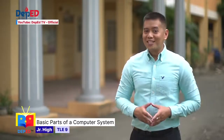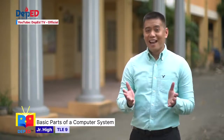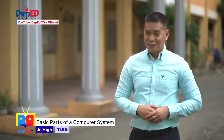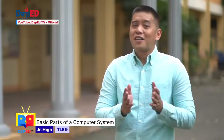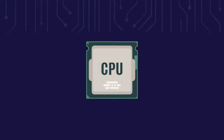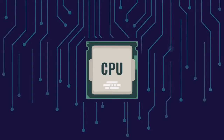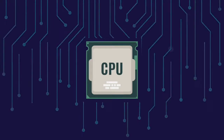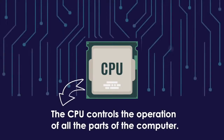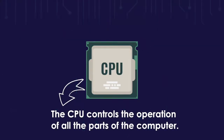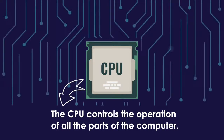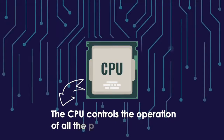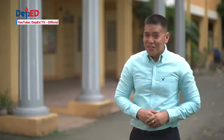Remember when I mentioned about the system unit? Let us now check some of the parts that are found inside the system unit. First, we have the CPU or the central processing unit. The central processing unit is also called a processor and is considered the brain of the computer. Because it controls the operation of all the parts of the computer. The purpose of a processor or the CPU is to perform the actual calculations done by the computer. They carry millions of calculations per second. It's quite impressive when you think of it!